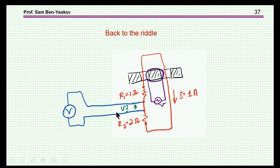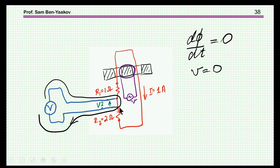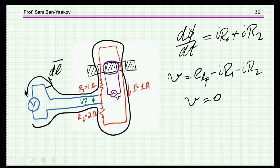Back to our riddle: I asked what is the voltage here. If you measure it from this side — just a piece of wire — the answer is zero volts. However, if you do the circulation going this way along this path, you pick up the induced EMF but also have the voltage drop across the resistors, and you end up with the same zero. So everything is consistent.